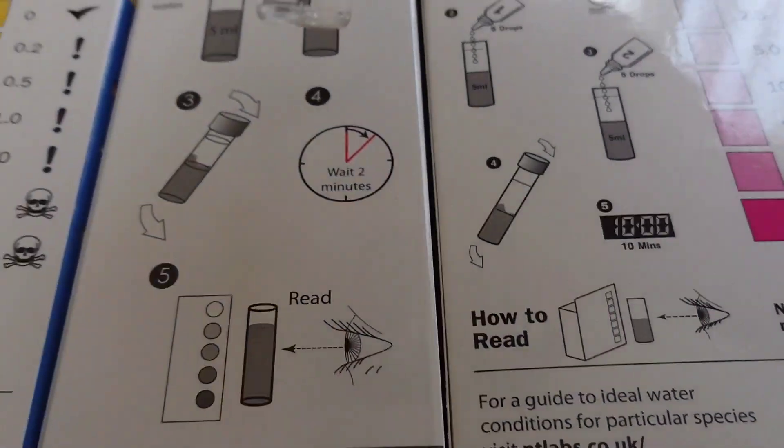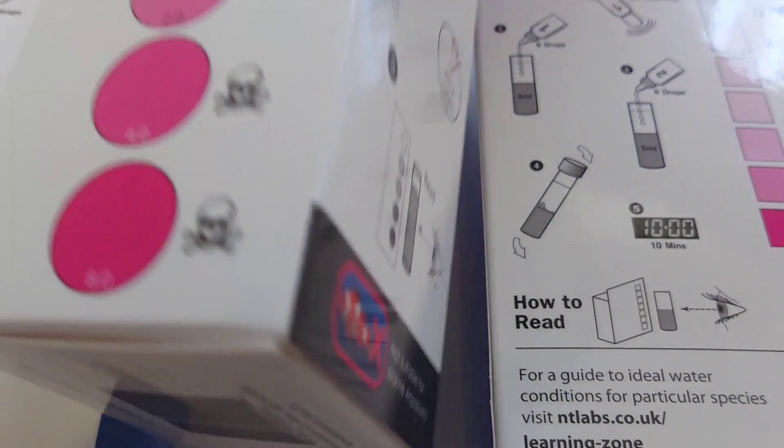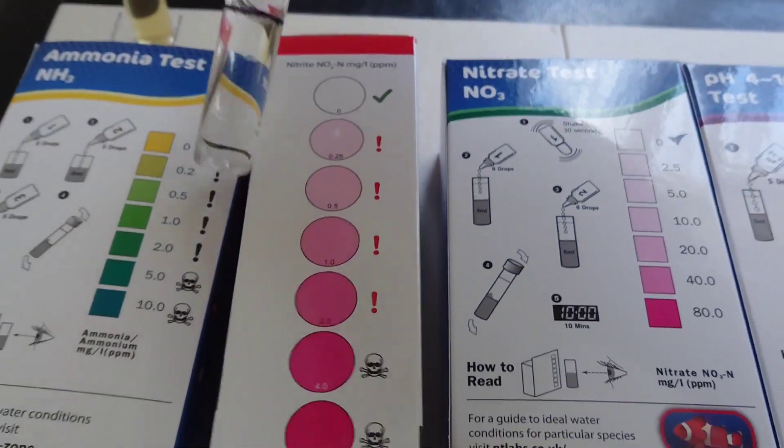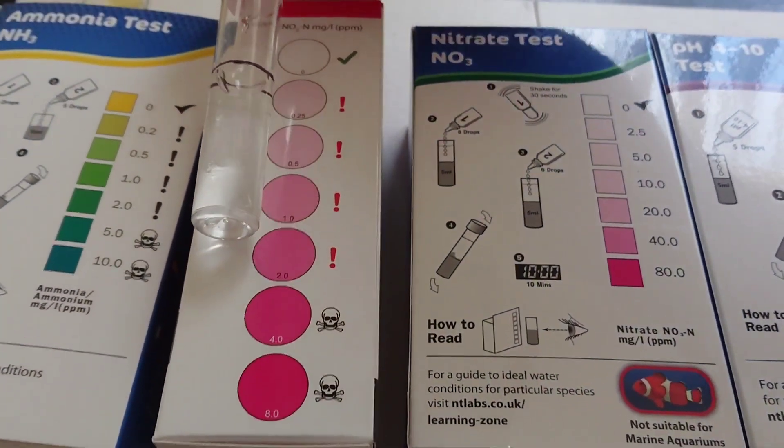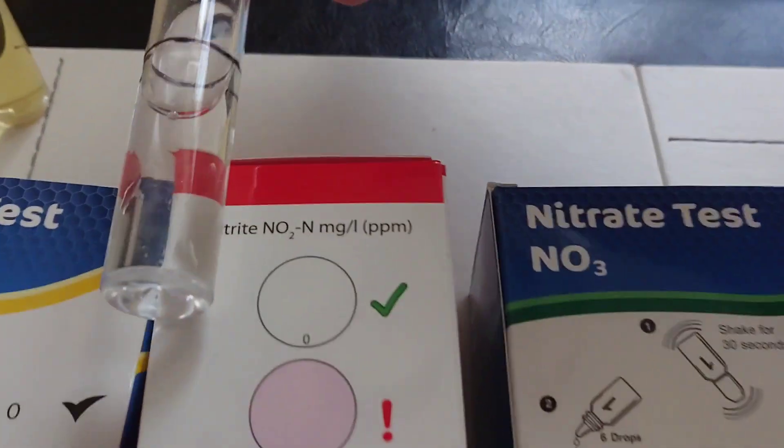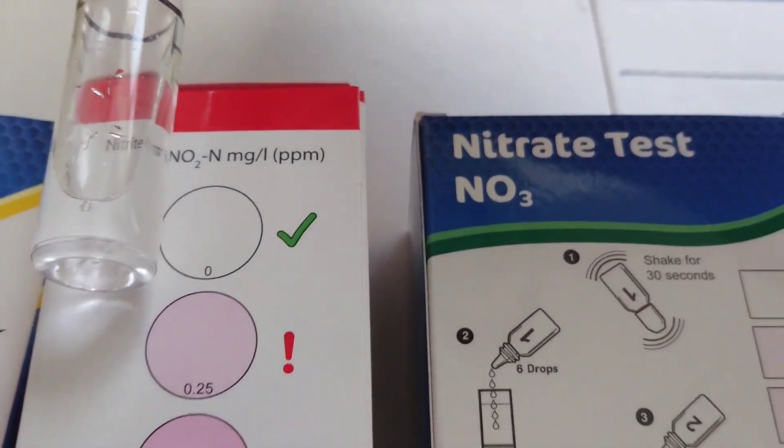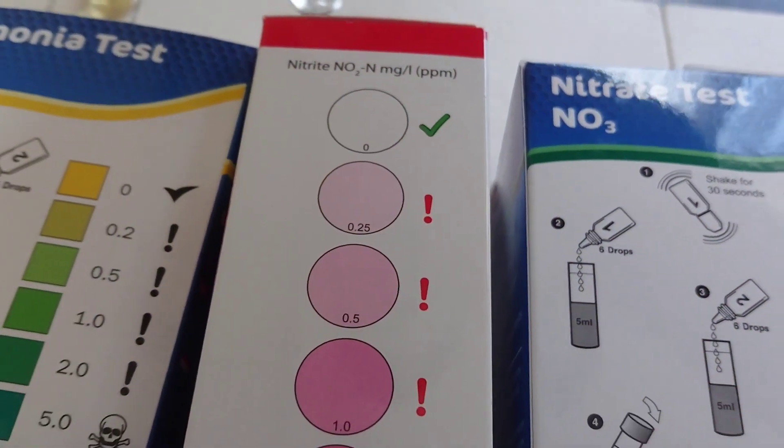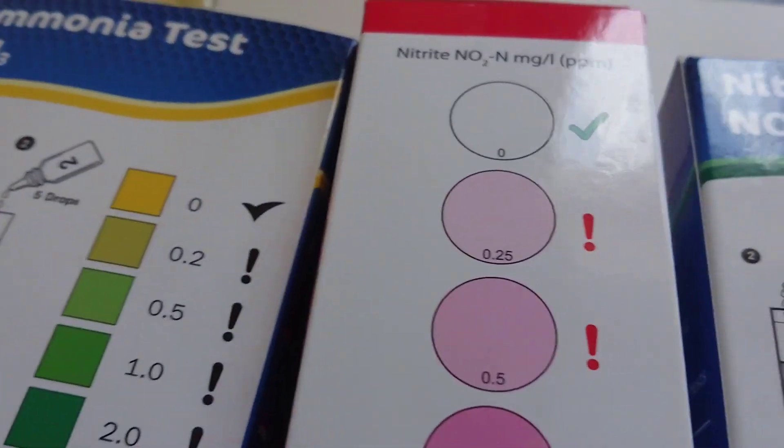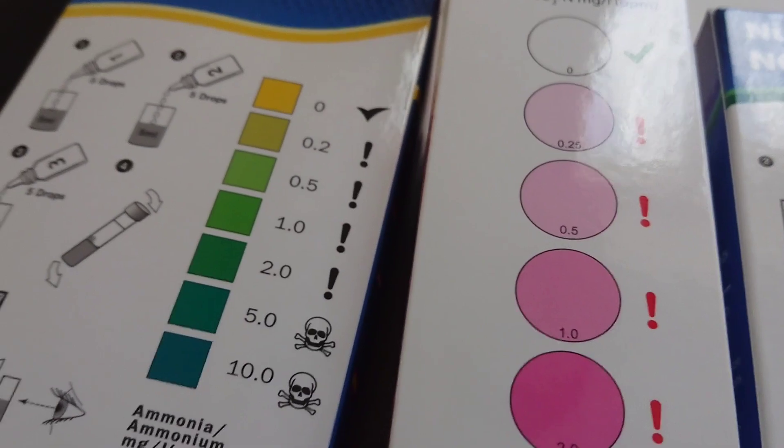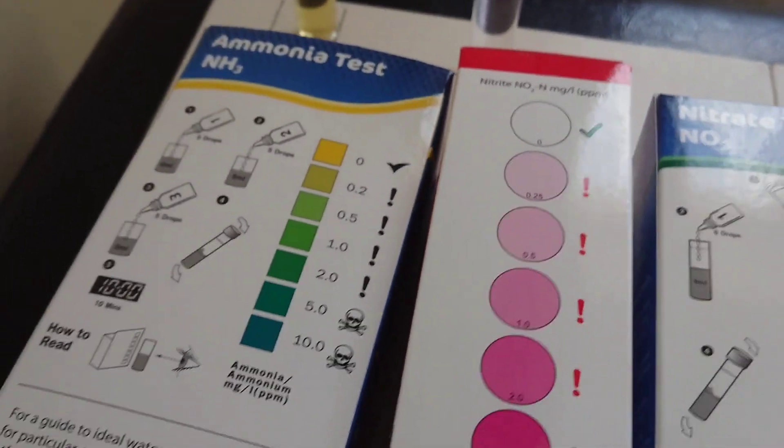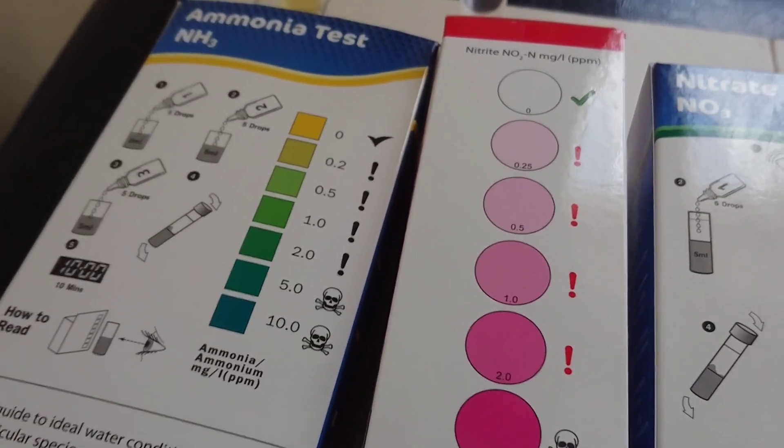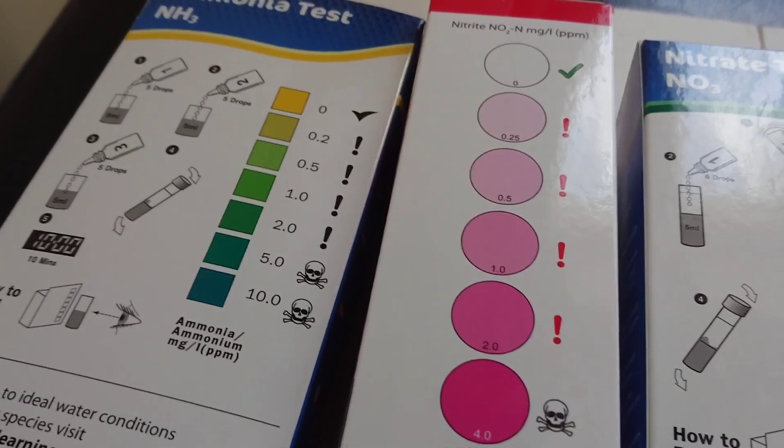Next we got nitrite: also zero, which is what you want in a cycled tank. If you're showing any high amount of either of these, then your tank isn't cycled yet and you shouldn't really be having fish in them.